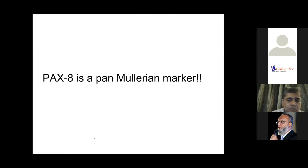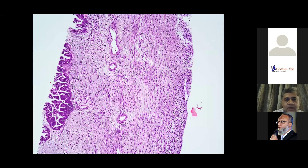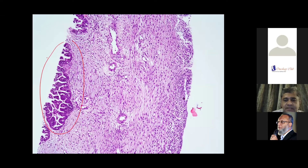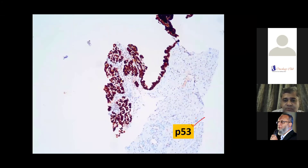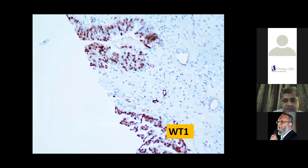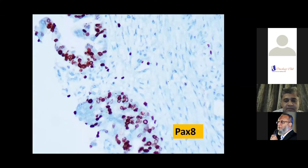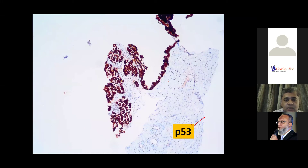Another picture shows a biopsy of an adnexal mass with adenocarcinoma at the edge. These are very malignant-looking cells. P53 staining needs to be interpreted properly — if you look at the nuclei of all tumor cells, they are very strongly and brightly brown, diffusely positive. This is a P53 mutant tumor, which occurs in high-grade serous cancer with P53 mutation. This is WT1 positive — a serous marker — and PAX8 positive — a Müllerian marker. So we have a Müllerian tumor expressing WT1 and showing P53 mutation, making it a high-grade serous adenocarcinoma of the ovary.